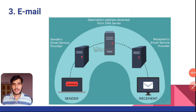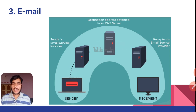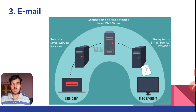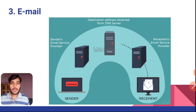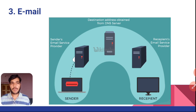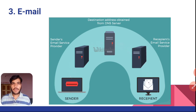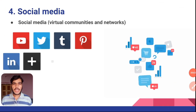The next one is email, also called electronic mail, which was implemented in the year 1971. There are many email service providers available — for example, Yahoo Mail, Rediff Mail, Gmail, and so on. Through email, people can send messages to each other using electronic media. The sender uses their email service provider to compose a mail, which is forwarded through the destination address obtained from the DNS server — that is the Domain Name System server — and the recipient receives the message.